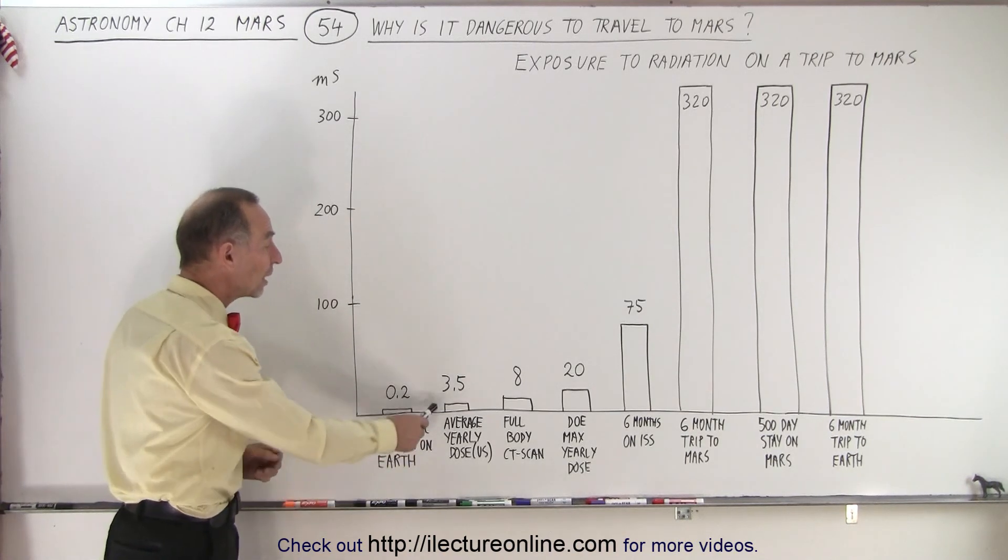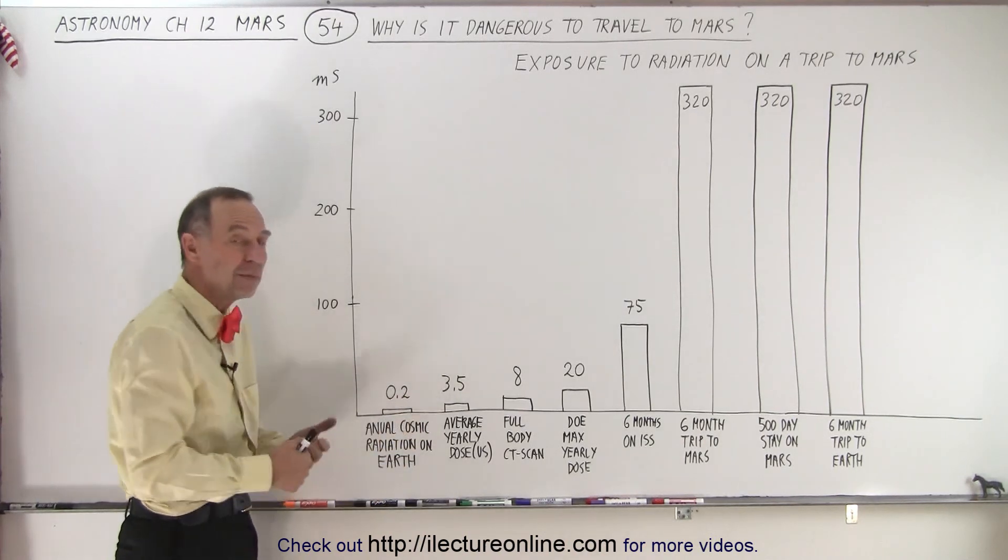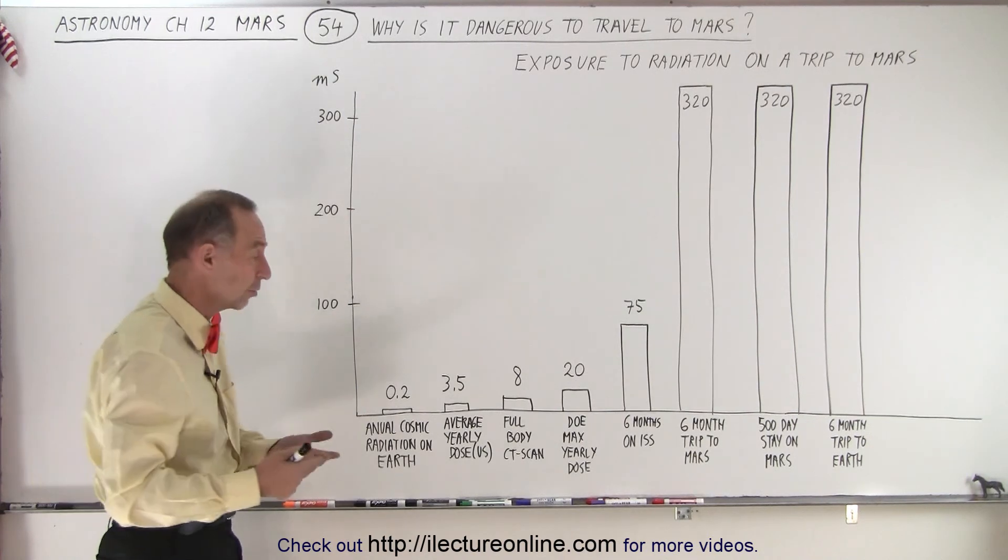The average yearly dose of a typical American citizen living in the United States is about 3.5 millisieverts per year, and at least half of those are typically due to natural causes.